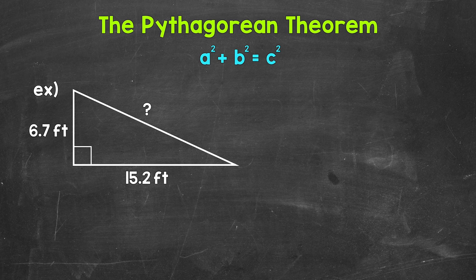Now remember, we use the equation a squared plus b squared equals c squared, with a and b being the legs. It doesn't matter which leg is a and which leg is b, and then c is always the hypotenuse. If we know the lengths of two sides of a right triangle, we can use the Pythagorean theorem to find the length of the third side.